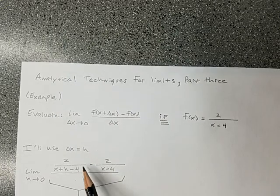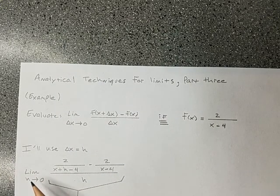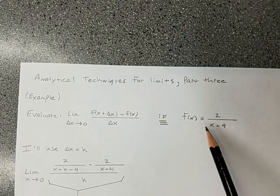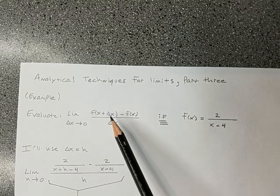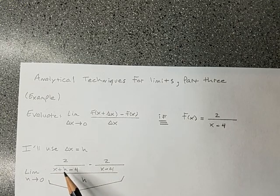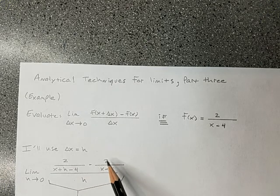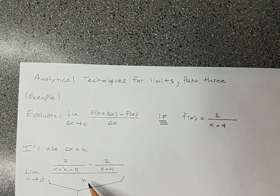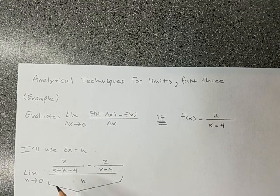So what does this turn out to be? It would be the limit as h goes to zero f of x plus h minus f of x over h for this function. Limit h goes to zero. What if I substitute x plus h in for the x right there? I'll get 2 over x plus h minus 4. So 2 over x plus h minus 4 minus f of x, which is 2 over x minus 4, over h. So there's my limit that I'm going to try to do.